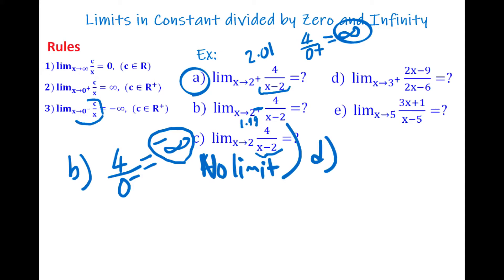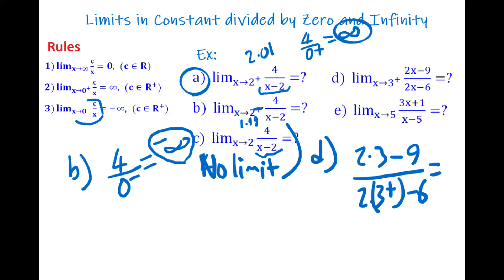In part d: the limit of (2x minus 9) divided by (2x minus 6) when x goes to 3 from the right side. Substituting 3: the numerator is 2(3) minus 9 = 6 minus 9 = negative 3. The denominator approaches 0 from the right (positive side). So we have negative 3 divided by 0+, which gives negative infinity.